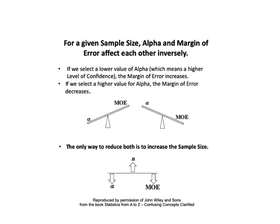For a given sample size, alpha and margin of error affect each other inversely, as these seesaws illustrate. If we select a lower value of alpha (higher confidence), the margin of error increases. If we select a higher value of alpha, the margin of error decreases. The only way to reduce both is to increase the sample size.